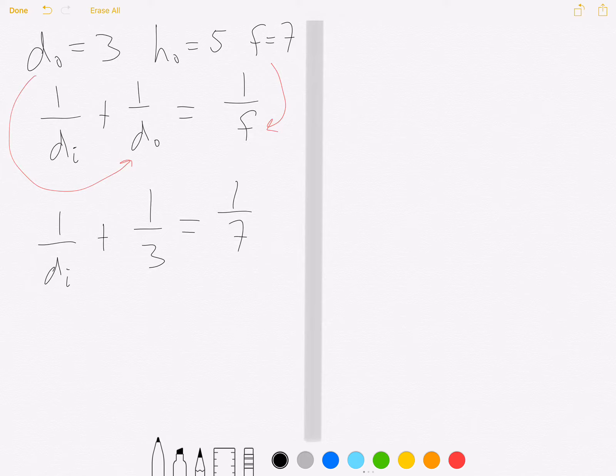Now, solving for di, which is what we want to do, we need to rearrange our equation. So 1 over di will be 1/7 minus 1/3 since we've moved that over to the right side. We can immediately see that we're going to need a common denominator, so let's go ahead and take care of that. 1 over di will equal 3 over 21 minus 7 over 21.